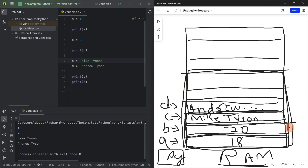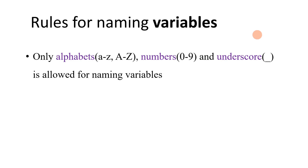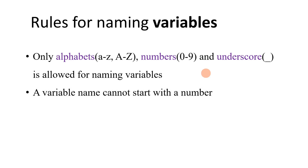This way, when you execute your program the operating system allocates some portion of memory to your Python program. Whenever we create a variable, we have to follow some rules for naming it. The first rule is you can only use alphabets, numbers, or an underscore to name your variable — if you use any other special character, the Python interpreter will give you an error. The second rule is a variable name cannot start with a number; it can start with an alphabet or an underscore, but never with a number.